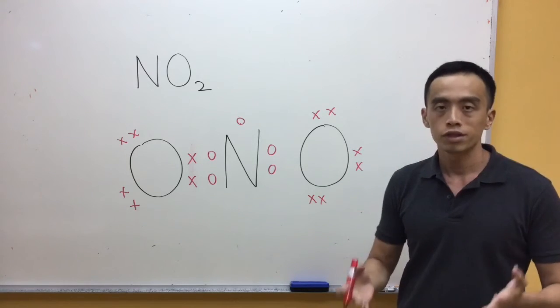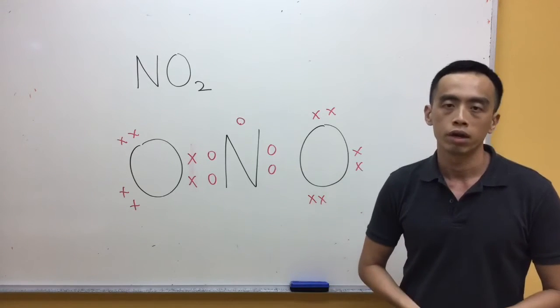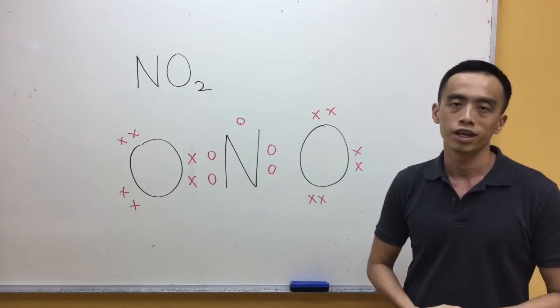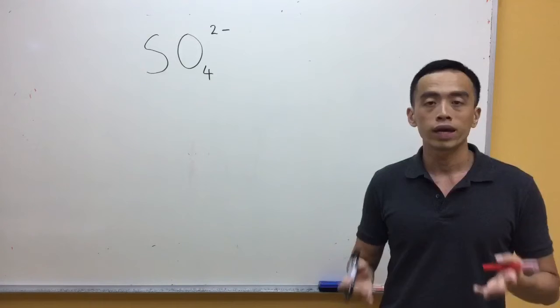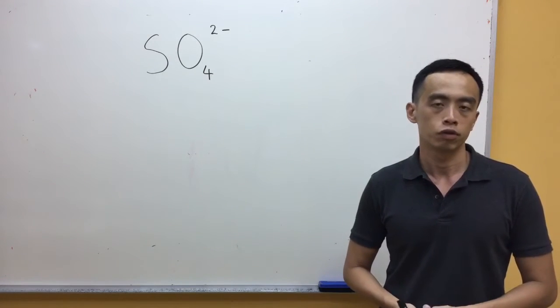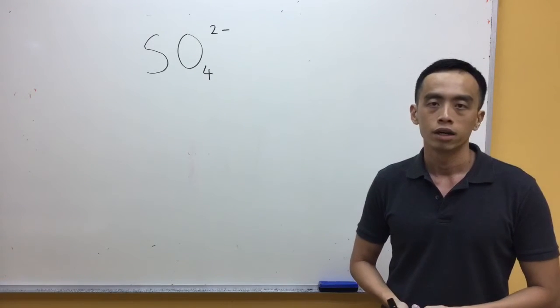So therefore, this is the dot-cross diagram for nitrogen dioxide. Now let us look at another example: sulphate, SO₄²⁻.